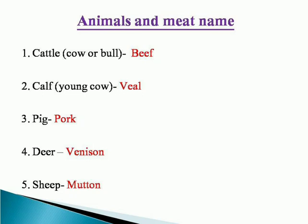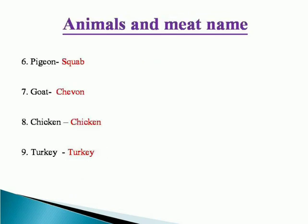The calf's meat is called veal. The pig is called pork. Deer is called venison. Sheep is called mutton. Pigeon is called squab. Goat is called chevon. Chicken is called poultry, and turkey is called turkey.